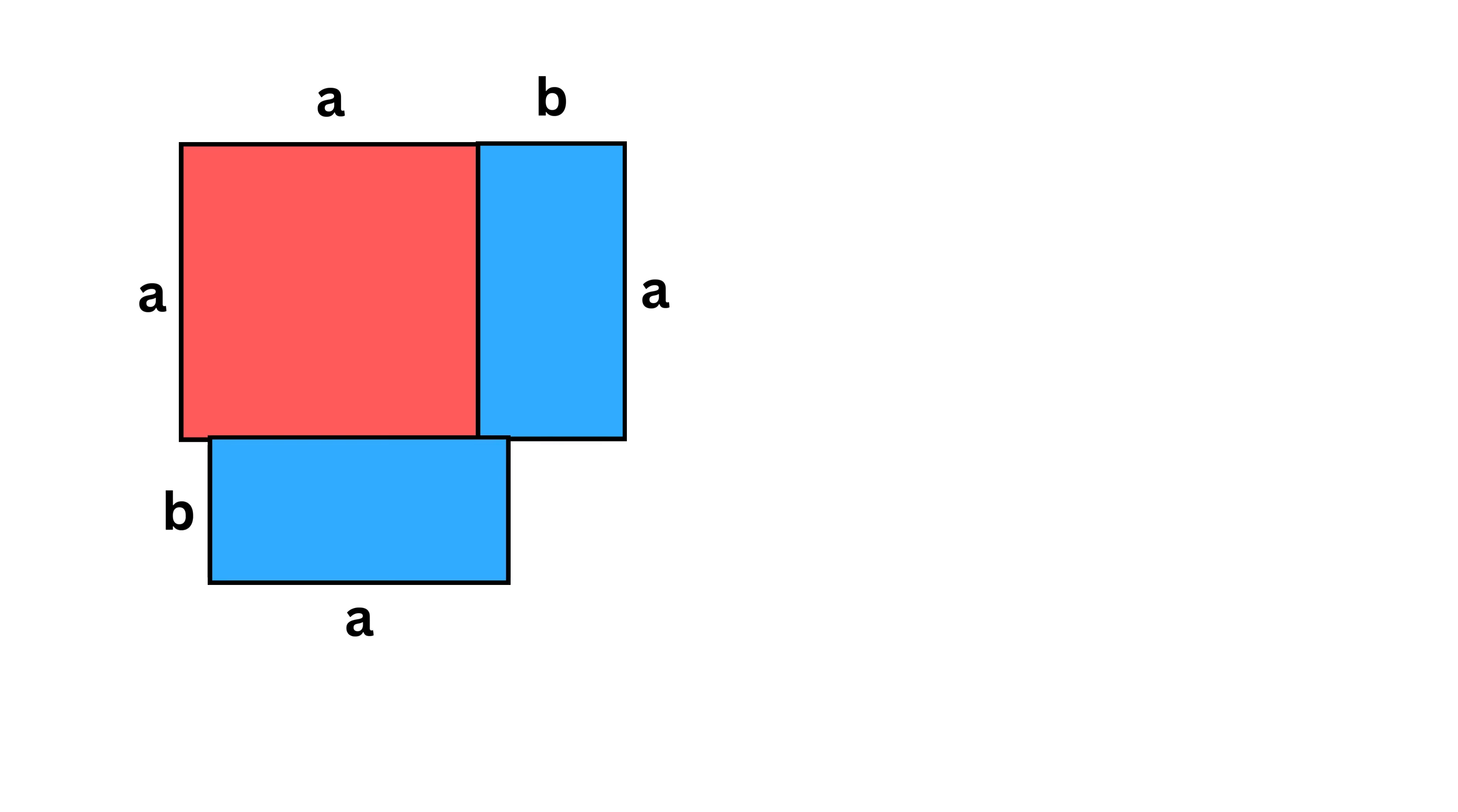Now the length of this piece is b, and this is also of length b, so this is a square of side length b. Now the area of this square will be a².